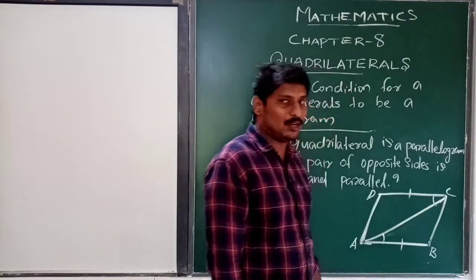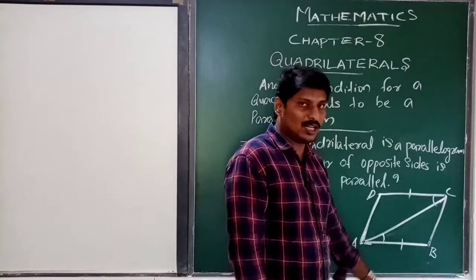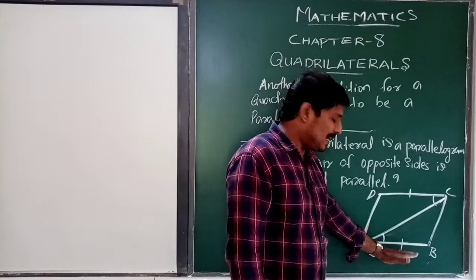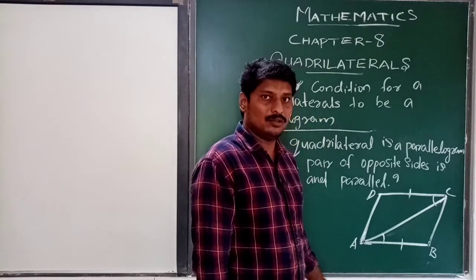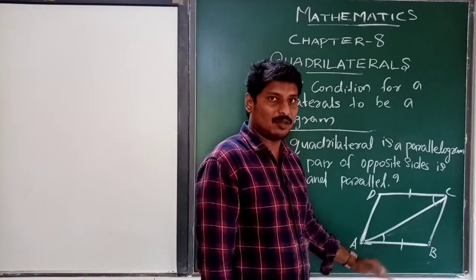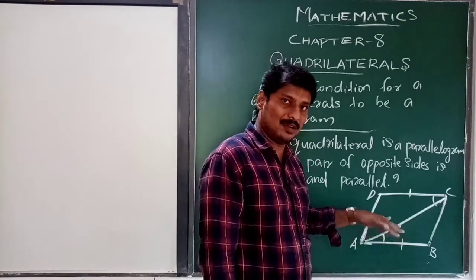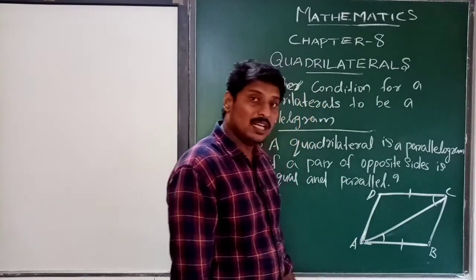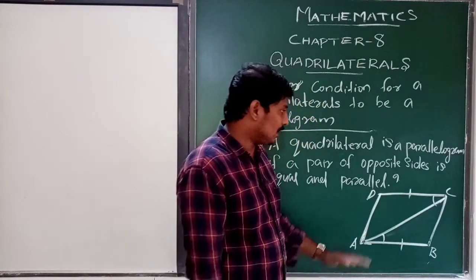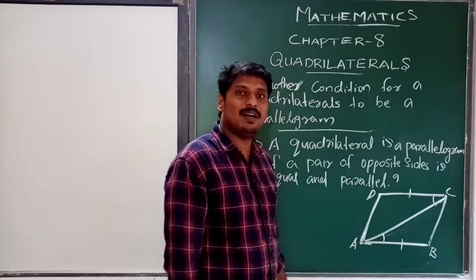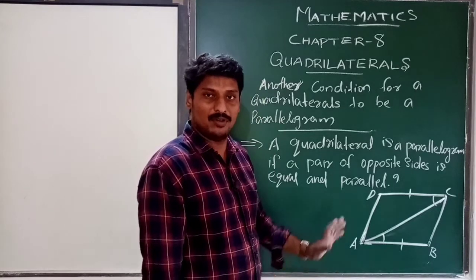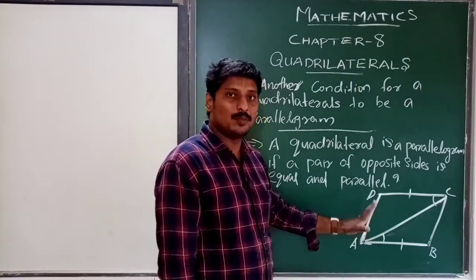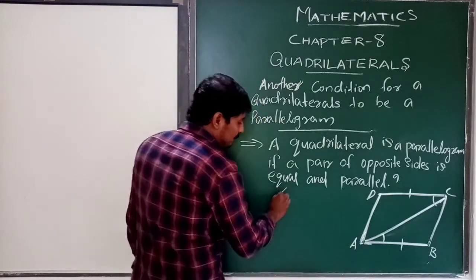In the figure, ABCD is a quadrilateral. This is a parallelogram — we need to show that ABCD is a parallelogram.